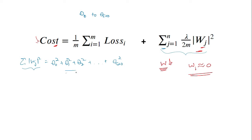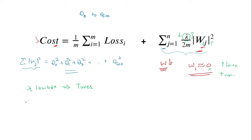We also have the term lambda, which you can consider as a tuner. It fine-tunes the proportion of linearity and non-linearity in our model. If we increase the value of lambda, it will force our model to reduce the w values even more, so more w's will have values close to zero, increasing the linearity. If we reduce lambda, we allow higher w values, thus increasing the non-linearity of our model. This lambda is also called the regularization parameter.